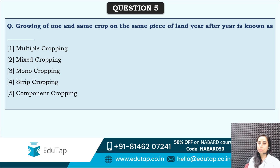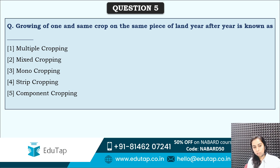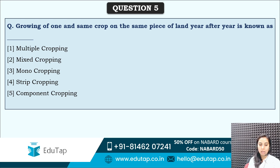Growing of one and same crop on the same piece of land year after year is known as what? Very easy question. We are expecting results to be out soon — within a week, probably, by the end of March. You must prepare. Start preparation if you are expecting to score decently. One and same crop on the same piece of land year after year — tell me quickly.